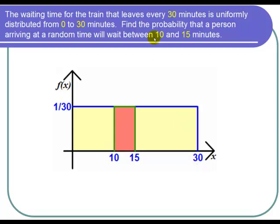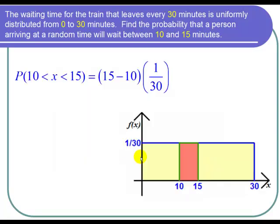We want to find the probability that the wait time is between 10 and 15 minutes. So what we want is that part of the rectangle between 10 and 15, and we want to find out its area.